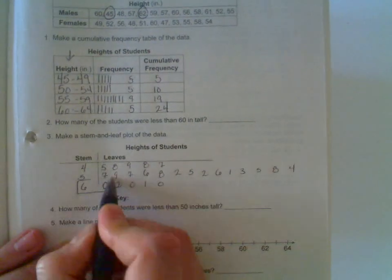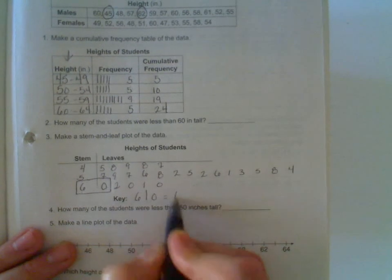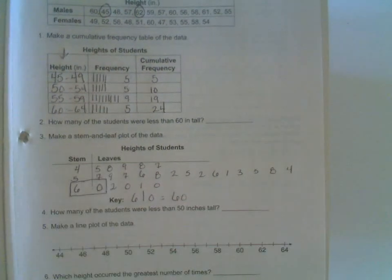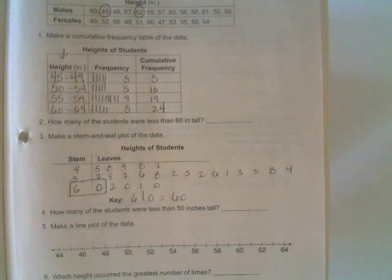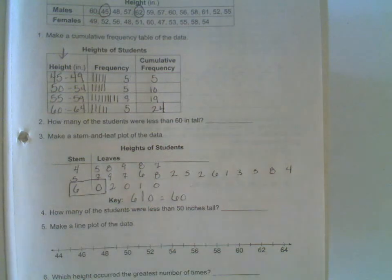So for instance, I could pick 6|0 right there, and next to key I'm going to write that 6|0 means 60. Remember, that could have other meanings—if we didn't have this list up top, we'd actually have to think about it. Like it could mean 6.0, just like 5|7 could actually mean 5.7. No, it doesn't because we have the list, but we do have to specify.